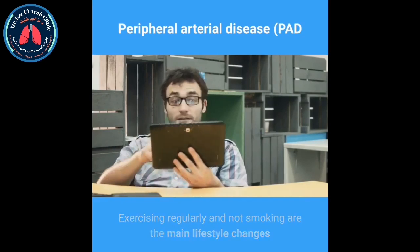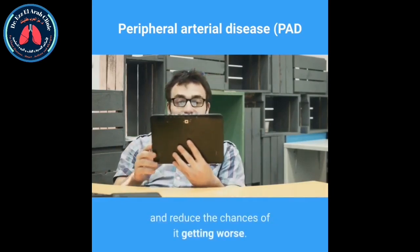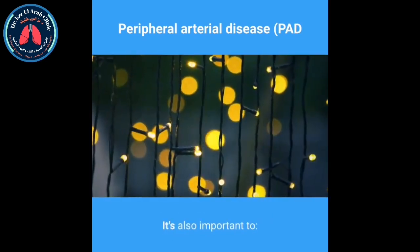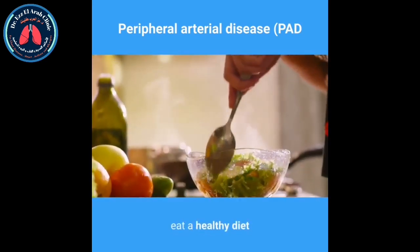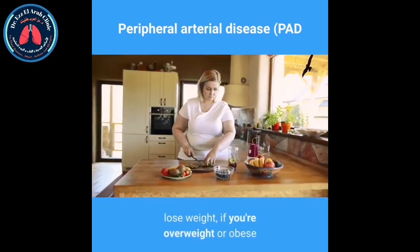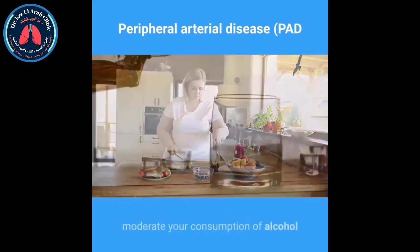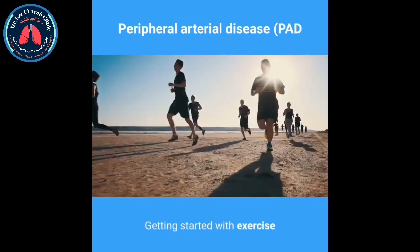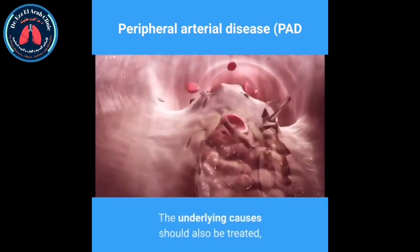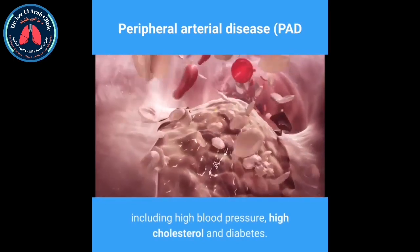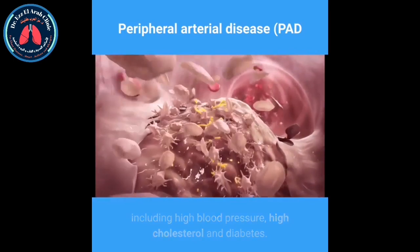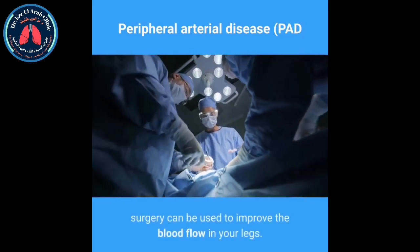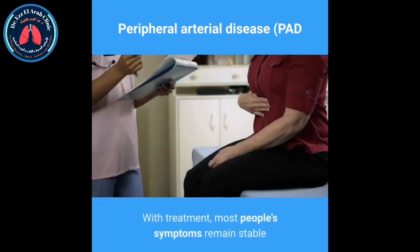Treating peripheral arterial disease: PAD is largely treated through lifestyle changes and medication. Exercising regularly and not smoking are the main lifestyle changes that can ease the symptoms of PAD and reduce the chances of it getting worse. It is also important to eat a healthy diet, lose weight if you are overweight or obese, and moderate your consumption of alcohol. The underlying causes, including high blood pressure, high cholesterol, and diabetes, should also be treated.